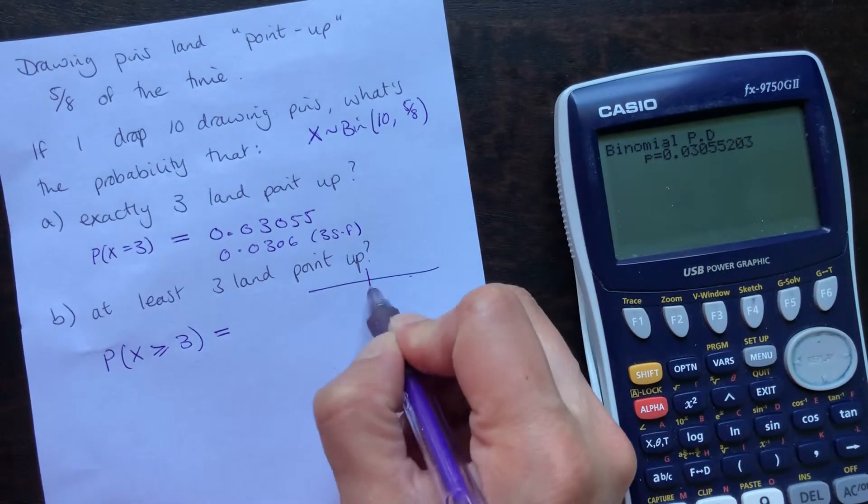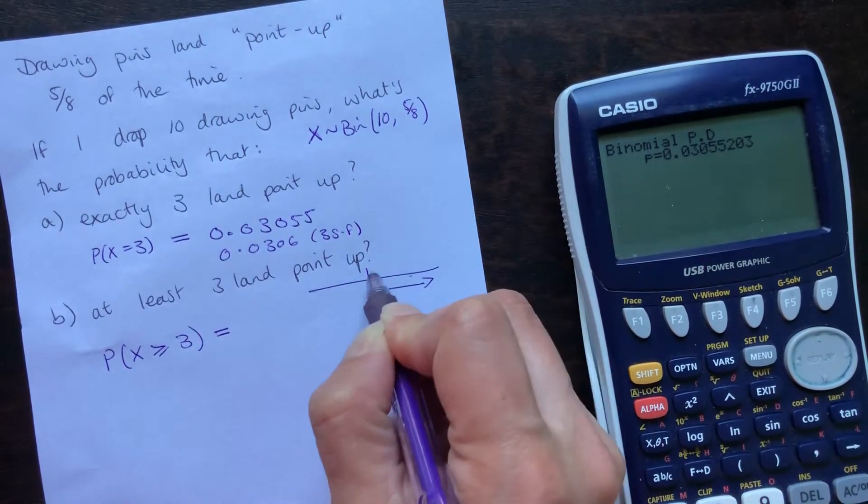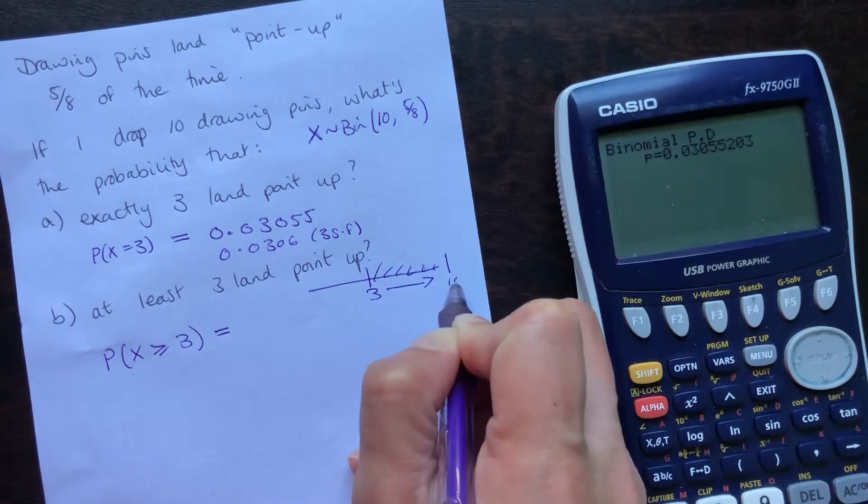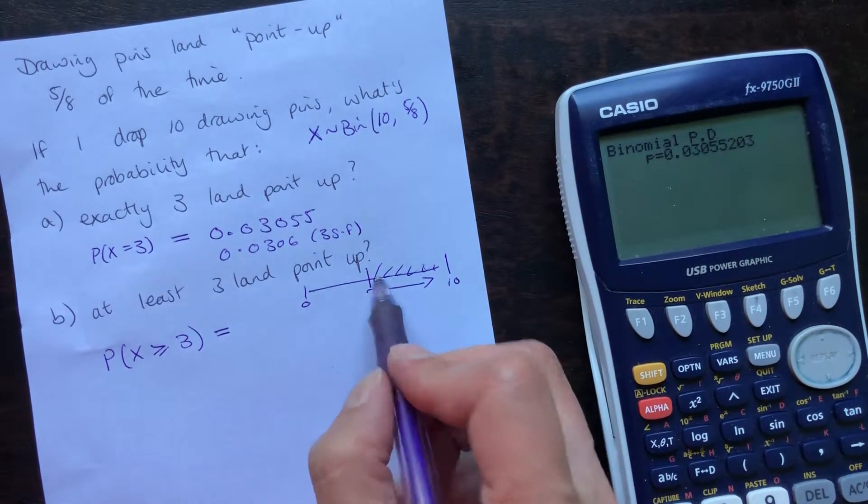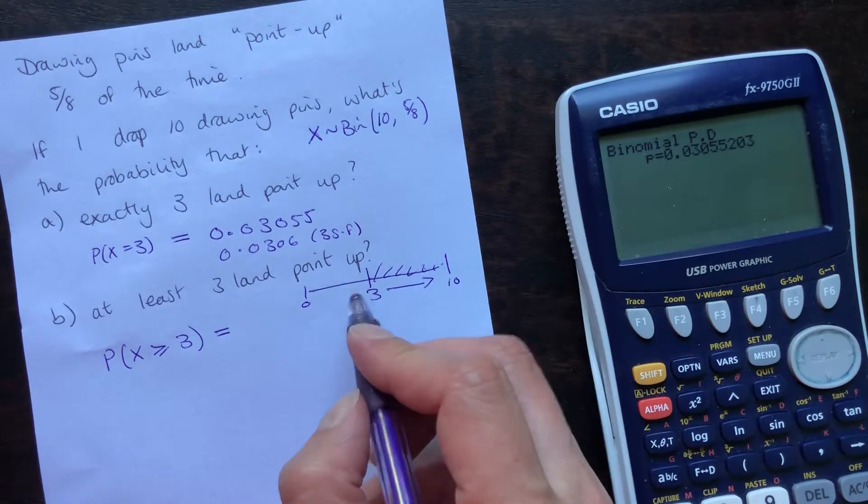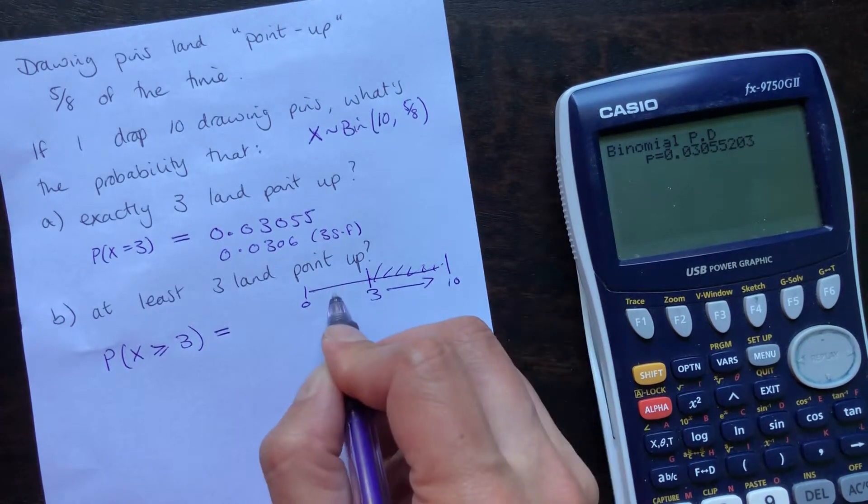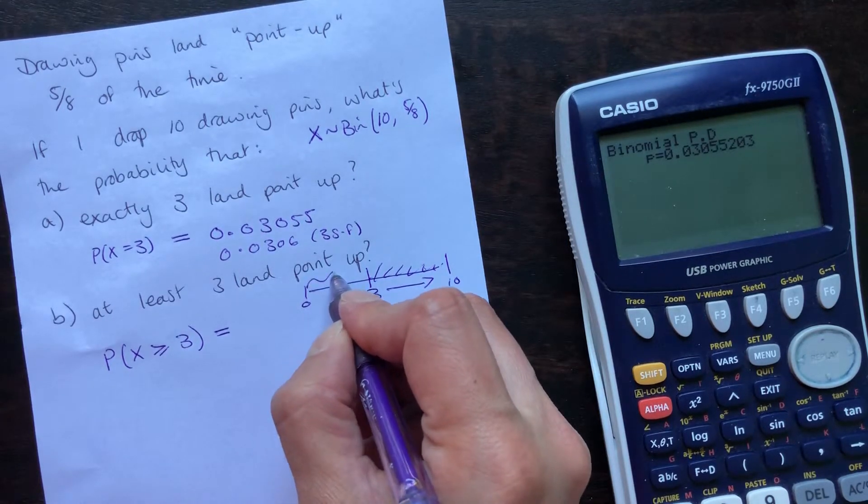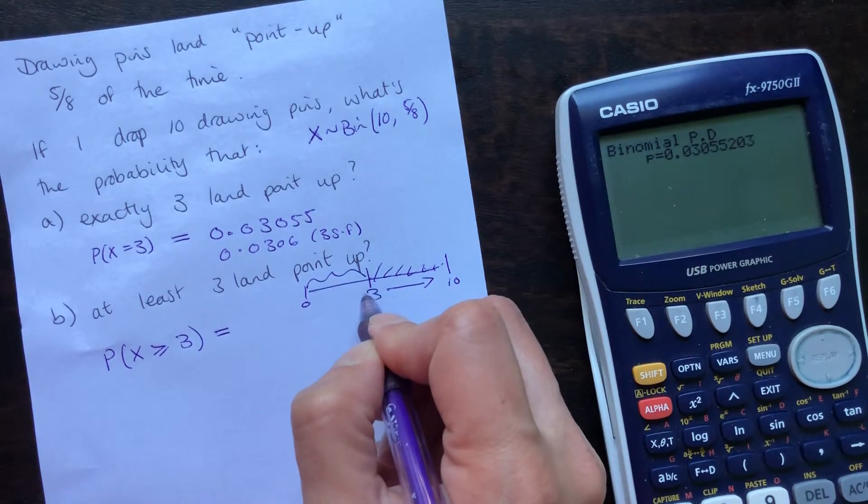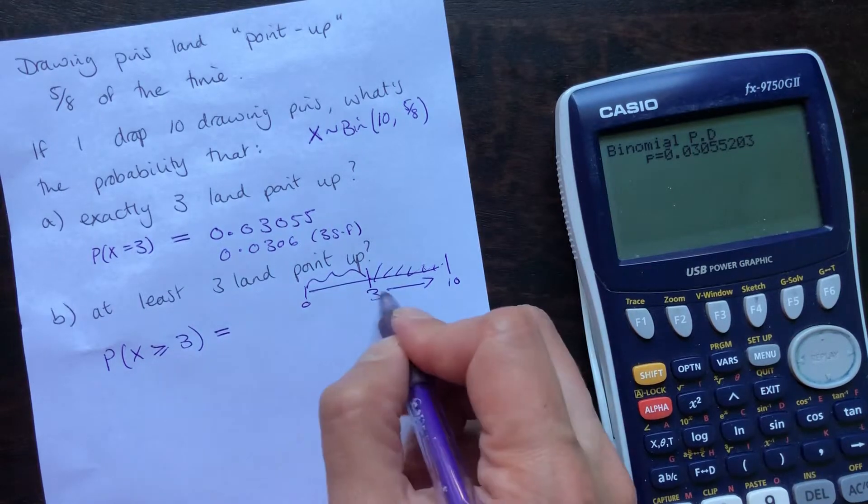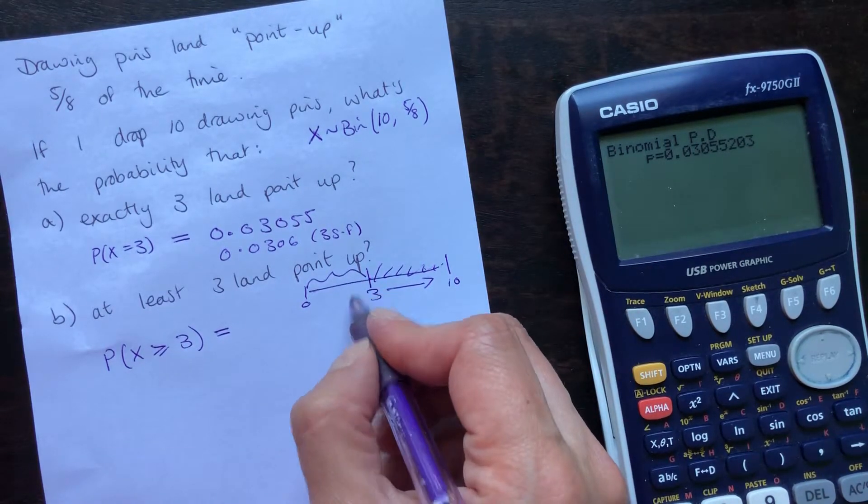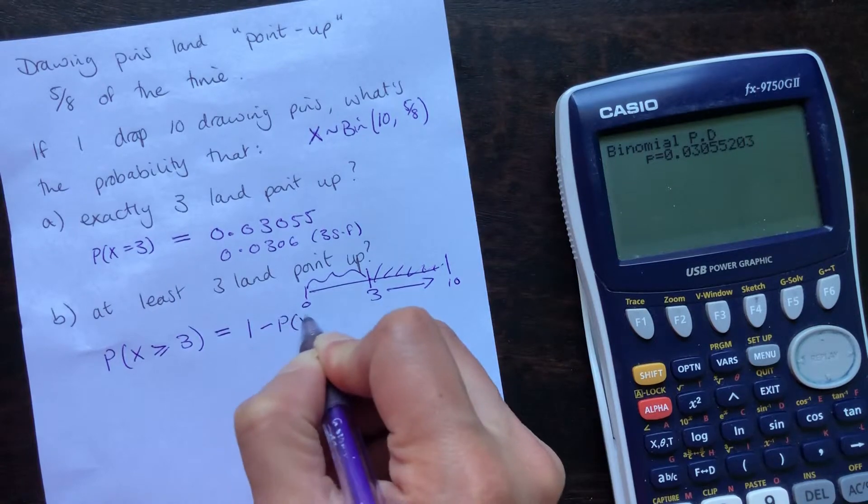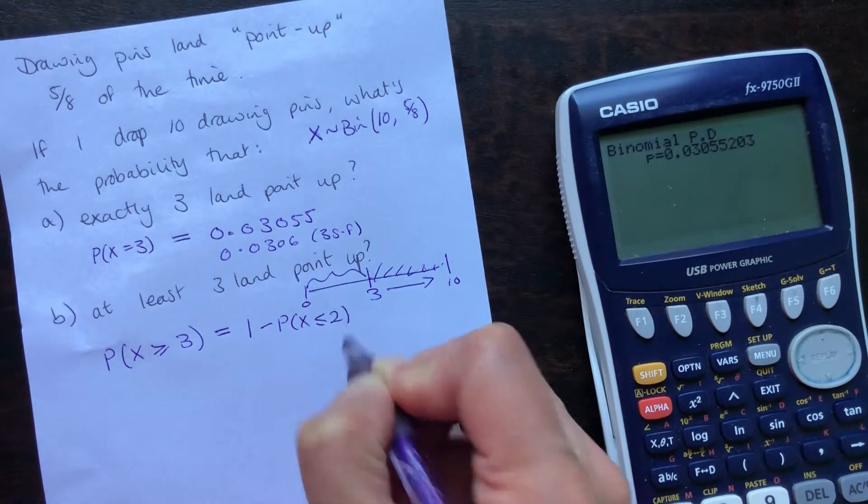If we had three or more up to a maximum of 10, so from nothing all the way to 10, three or more would be... Remember, the whole probability adds up to one. So, that would be one minus this section here. That would be less than three, not including the three, because that got included in the three or more. So, that would be two or less. So, it would be one minus the probability that X is less than or equal to two.